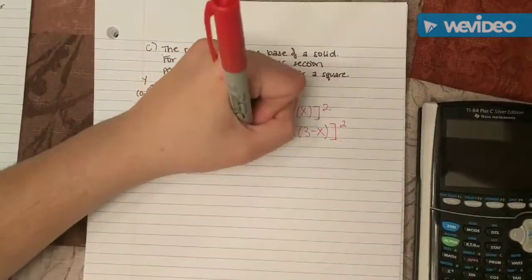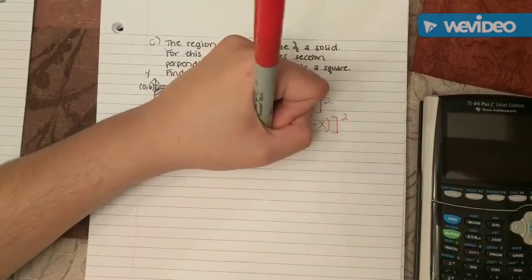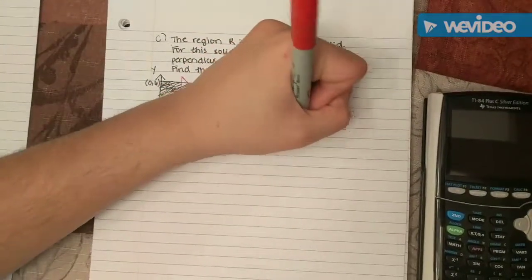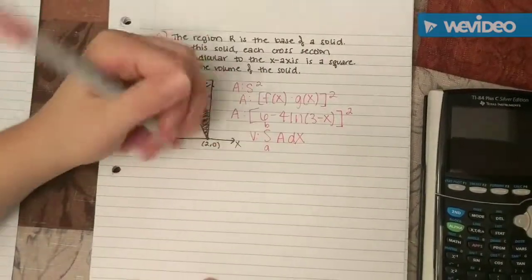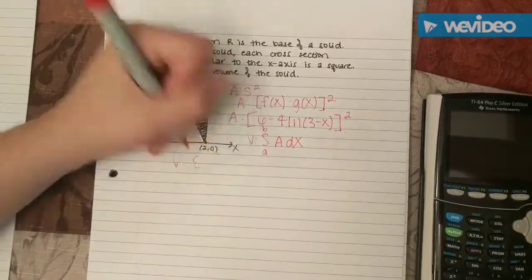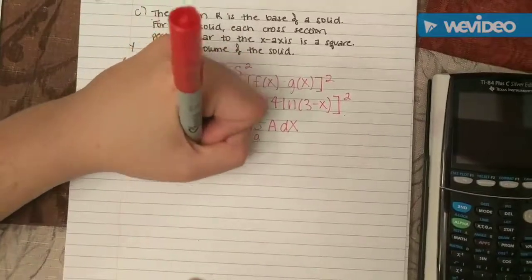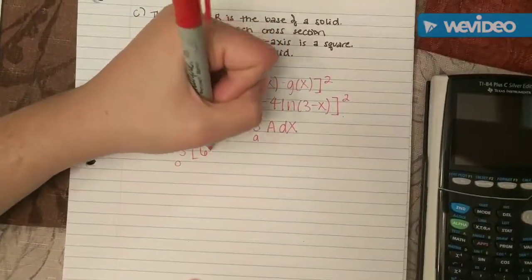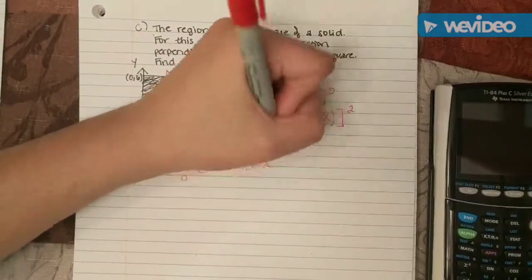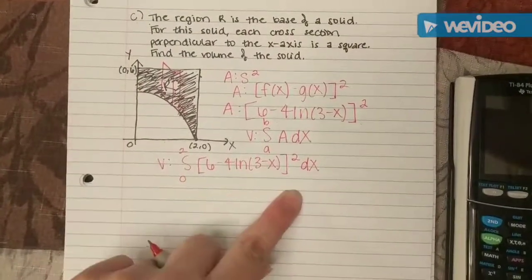For volume, the formula for cross-sections is the integral from a to b of the area dx. The formula all written out would be the integral of 0 to 2, so your two x's, and then you'd have 6 minus 4 natural log of 3 minus x squared dx. Then you just plug this into your calculator.